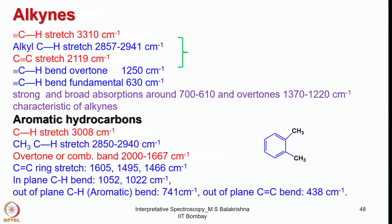Before that, let us look into alkynes. We looked into aliphatic hydrocarbons and cyclohexane; now we shall look into alkynes. The ≡C–H stretch comes around 3310 cm⁻¹, alkyl C–H stretch around 2857 to 2941 cm⁻¹, and C≡C stretch around 2119 cm⁻¹. The C–H bend overtone is around 1250 cm⁻¹ and the fundamental C–H bend vibration appears at 630 cm⁻¹.